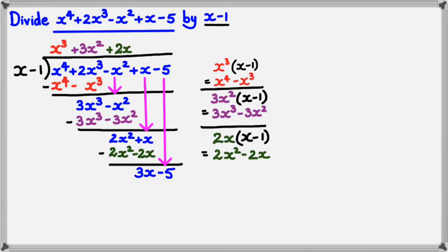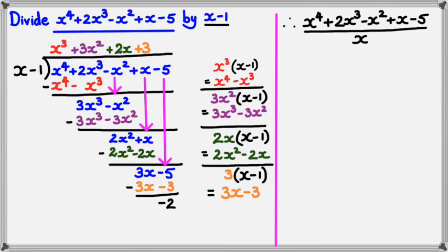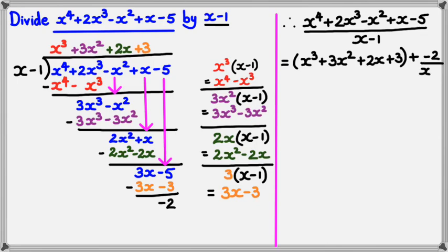And, it's just repeating the same process. Go back to the quotient, and we're going to multiply this time by 3 because we want to get rid of 3x. So, we've got 3 times x minus 1 is equal to 3x minus 3. We do our last bit of subtraction: 3x take away 3x is 0, and negative 5 take away minus 3 is equal to minus 2. So, basically, if you have x to the power of 4 plus 2x cubed minus x squared plus x minus 5, divided by x minus 1, it can be written as the quotient x cubed plus 3x squared plus 2x plus 3, plus the remainder negative 2 divided by the divisor x minus 1.